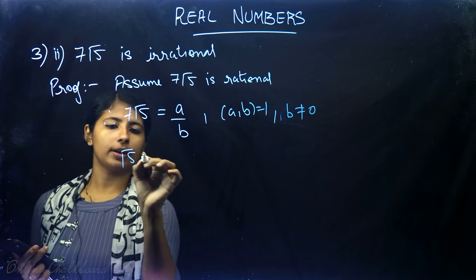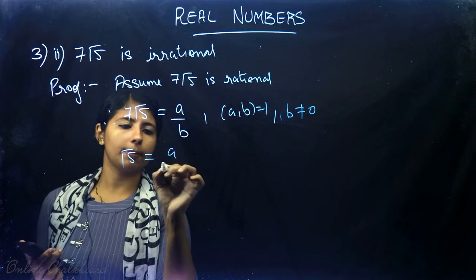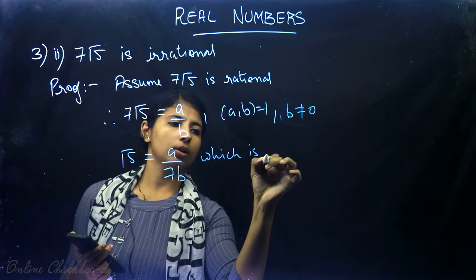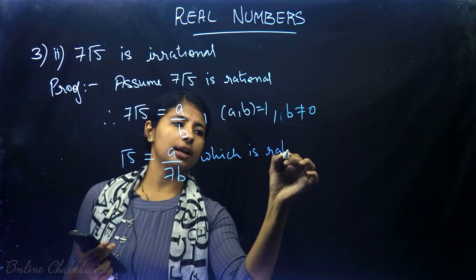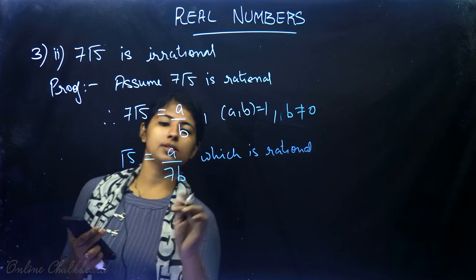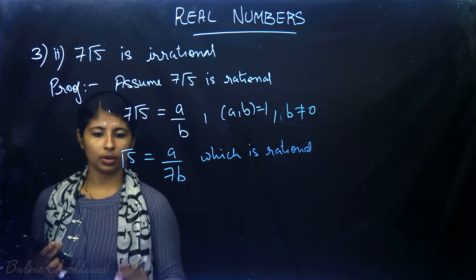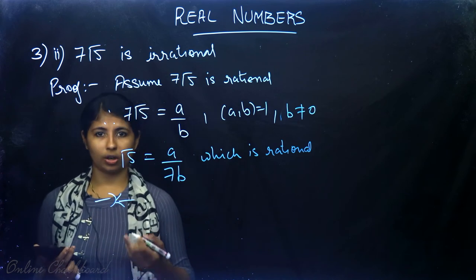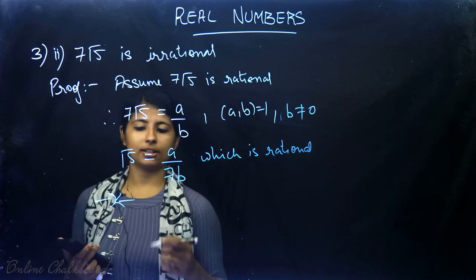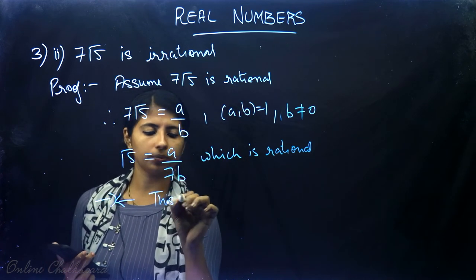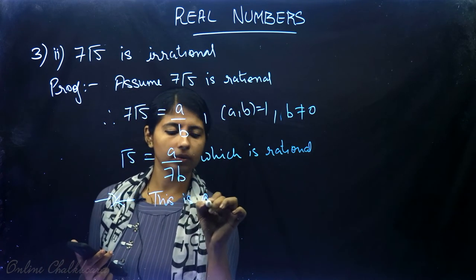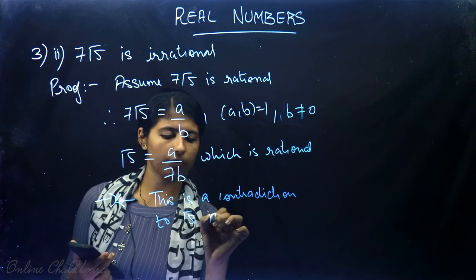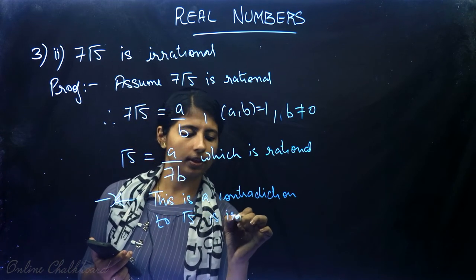So I get √5 = a/(7b), which is rational. We got √5 is rational because it could be expressed in the form a/(7b). This is a contradiction to the fact that √5 is irrational.